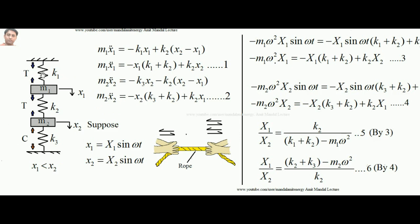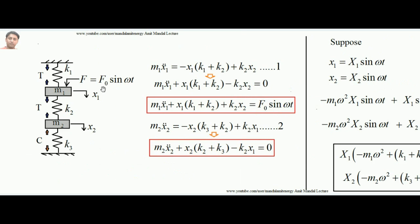This is a vibrating system in which no external force is applied — vibration occurs naturally. Now we will talk about the case where a sinusoidal force is applied to a mass. This is called two-degree-of-freedom with harmonic excitation. Suppose a force is acting on mass m1, equal to F₀ sin(ωt), varying sinusoidally.